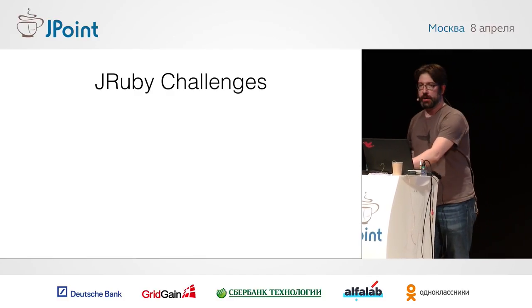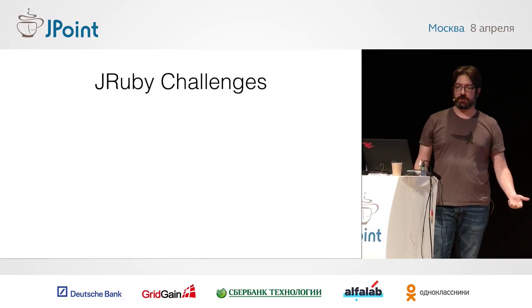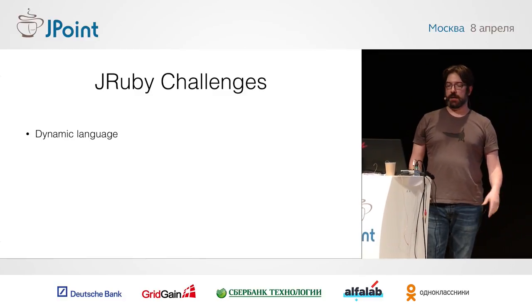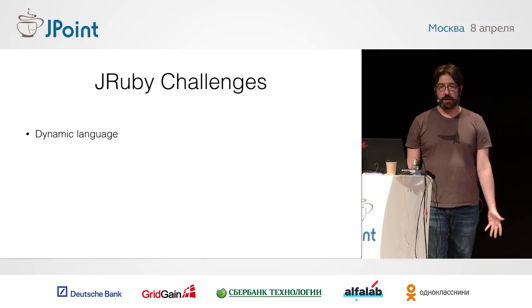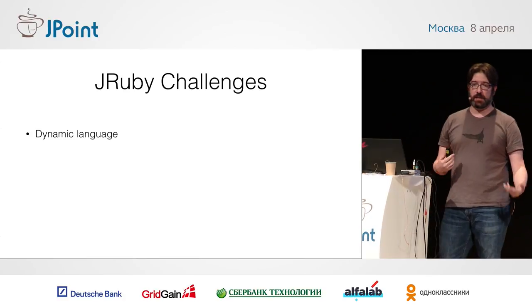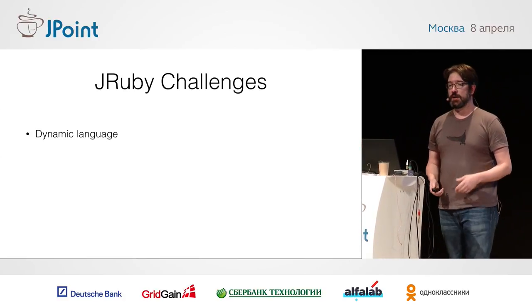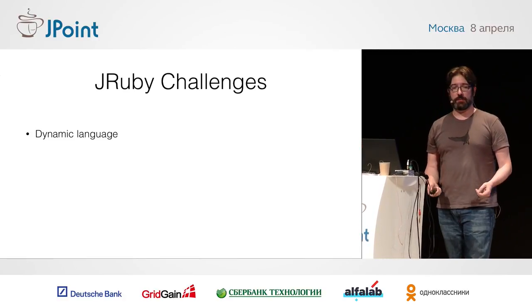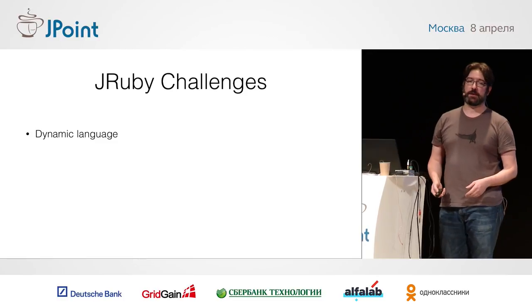In the process of working on JRuby, there have been a lot of challenges over the years. I mentioned these in my talk yesterday. Dynamic language — the fact that it's a dynamic language means you have to do dynamic dispatch. We want to try and optimize Ruby as much as possible, so there's always been challenges with that.